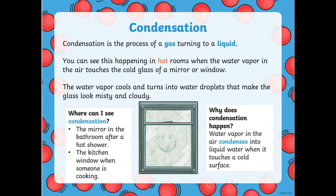Condensation is the process of a gas turning to a liquid. You can see this happening in hot rooms when the water vapour in the air touches the cold glass of a mirror or a window. The water vapour cools and turns into water droplets that make the glass look misty and cloudy. This is condensation.